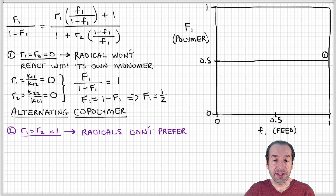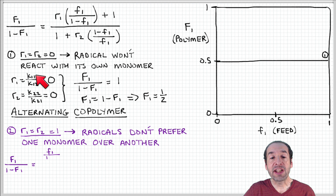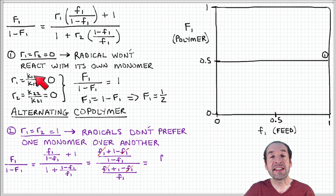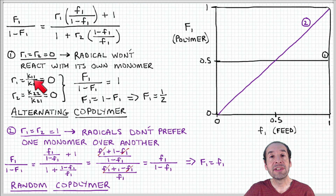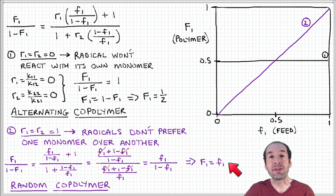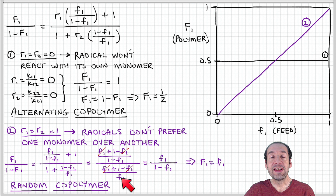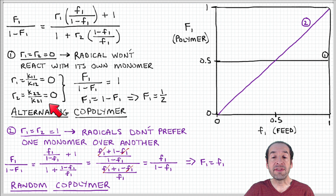Another situation is if both reactivity ratios are equal to 1. This means the rate constant for adding the same monomer versus the cross-reaction are equal. Substituting R1 = R2 = 1 into the copolymer equation gives that the mole fraction of monomer 1 in the copolymer equals the mole fraction of monomer 1 in the feed. This corresponds to a random copolymer, because addition of monomer 1 or monomer 2 are equally likely at each propagation step. This is shown as curve 2 in the plot.